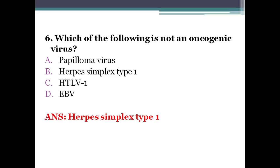Human papilloma virus (HPV) causes cervical cancer. HTLV-1 (human T-cell leukemia virus 1) causes T-cell leukemia or lymphoma. EBV (Epstein-Barr virus) causes nasopharyngeal carcinoma, Burkitt's lymphoma, and B-cell lymphoma.